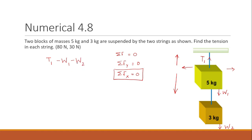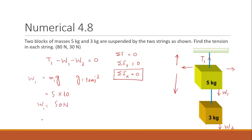W1 equals m1 times g, so 5 kg multiplied by 10 m/s² — where g is the gravitational acceleration at Earth's surface — giving W1 equals 50 newtons. Similarly, W2 equals 3 multiplied by 10, which equals 30 newtons.